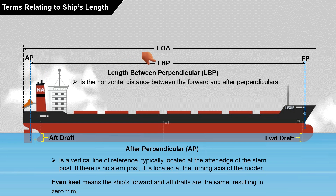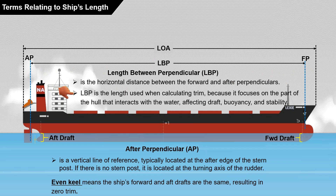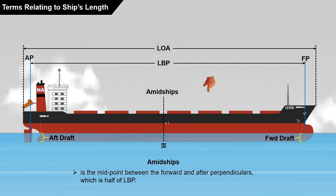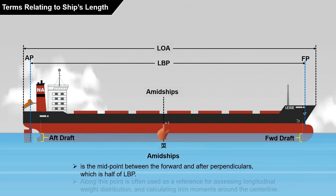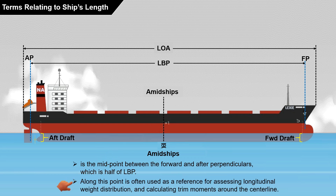Now, length between perpendiculars is the horizontal distance between the forward and aft perpendiculars. LBP is the length used when calculating trim, because it focuses on the part of the hull that interacts with the water, affecting draft, buoyancy, and stability. Amid-ships is the midpoint between the forward and aft perpendiculars, which is half of the length between perpendiculars. Along this point, it is often used as a reference for assessing longitudinal weight distributions and calculating trim moments around the centerline.